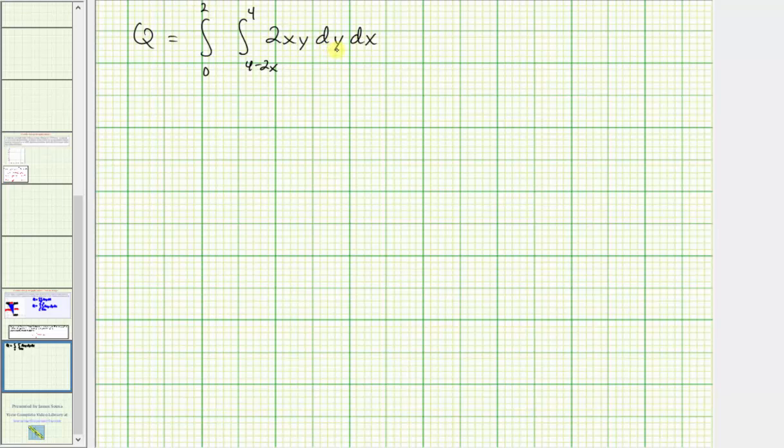So we first integrate with respect to y, treating x as a constant. So the anti-derivative is going to be two x times y squared divided by two. We can simplify the anti-derivative. Two divided by two simplifies to one.